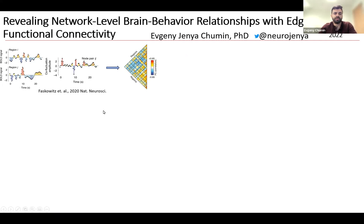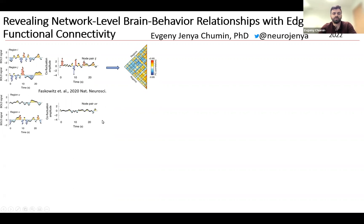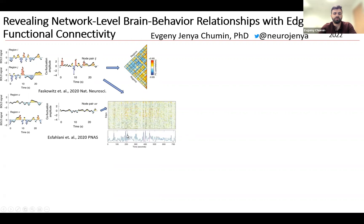Olaf Sporns, Richard Betzel, and many others here at IU Bloomington have developed a new method where we stop one step short of computing this Pearson correlation, and now we have an edge time series, which gives us an index of co-fluctuation over time for sets of region pairs. Using these edge time series, we can compute a summary metric such as root sum squared, and we can rank each time point based on its absolute co-fluctuation using root sum squared and extract components by making cuts along the RSS from highest to lowest RSS.